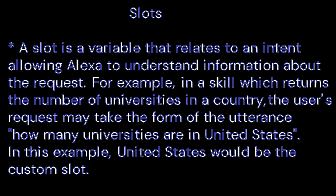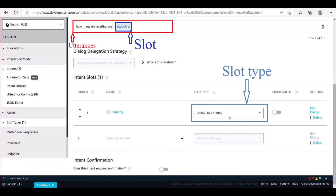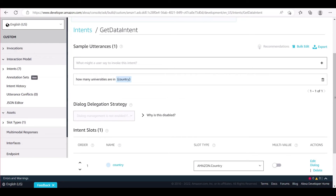A slot is a variable that relates to an intent, allowing Alexa to understand information about the request. For example, in a skill which returns the number of universities in a picked country, the user's request may take the form of the utterance 'How many universities are in United States?' In this example, United States would be the custom slot.